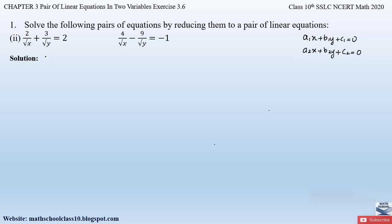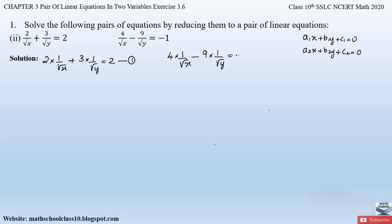The first given equation can be rewritten as 2·(1/√x) + 3·(1/√y) = 2. Let this be equation 1. Similarly, the second given equation can be written as 4·(1/√x) − 9·(1/√y) = −1. Let this be equation 2. In both equations we have the terms 1/√x and 1/√y.